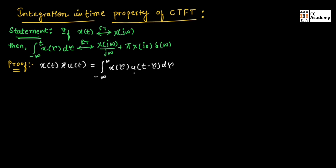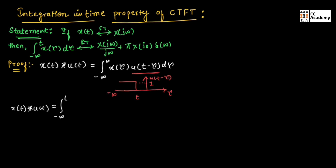Now, we need to know the term u of t minus tau. To understand this, let us take the waveform. We can represent u of t minus tau like this: it will be equal to 1 for tau ranging from minus infinity to t. If tau is greater than t up to infinity, u of t minus tau is 0. So, we can write the above equation as x of t convoluted with u of t as integration of minus infinity to t of x of tau d tau.